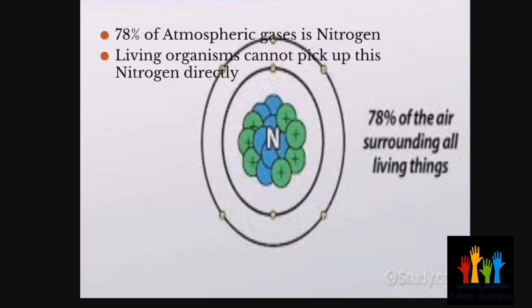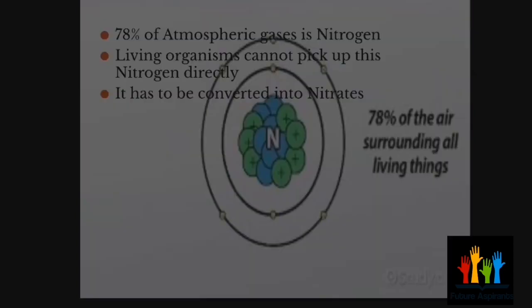When we talk about living organisms, although there is a huge amount of nitrogen present around us in the atmosphere, plants, animals, and human beings cannot directly obtain this nitrogen from the atmosphere — they are not capable of obtaining it directly. However, some bacteria are able to obtain nitrogen directly from the atmosphere; we call them nitrogen-fixing bacteria. They are the only organisms capable of picking nitrogen from the atmosphere and using it for survival.